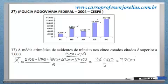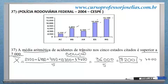A média aritmética seria 7.200 acidentes. Ele disse que essa média aritmética seria superior a 7.000 — 7.200 é maior que 7.000, é superior. Portanto, ele está certo. Realmente, é superior a 7.000. Resposta certa, questão número 37.